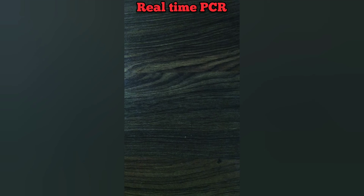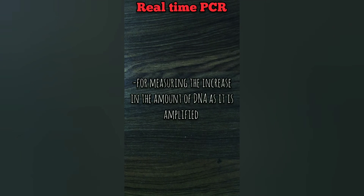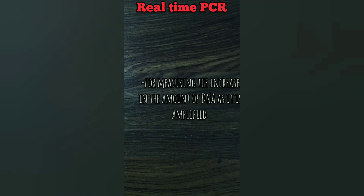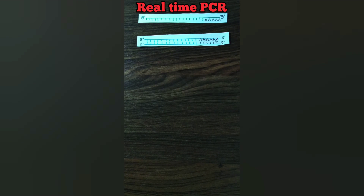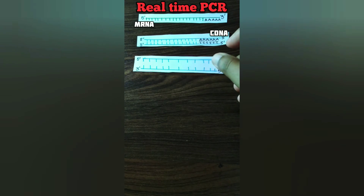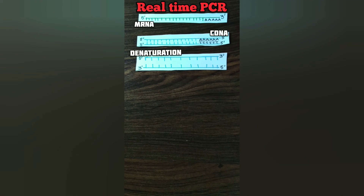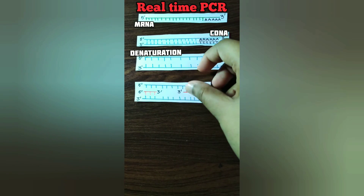The second type of PCR we are going to discuss is real-time quantitative PCR. It is a PCR method for measuring the increase in the amount of DNA as it is amplified. An important application of real-time PCR is the accurate quantification of messenger RNA levels in a sample. The real-time PCR procedure is very similar to reverse transcriptase PCR; it only differs during the extension phase. The DNA synthesis reaction mixture contains SYBR green, a very sensitive DNA dye.